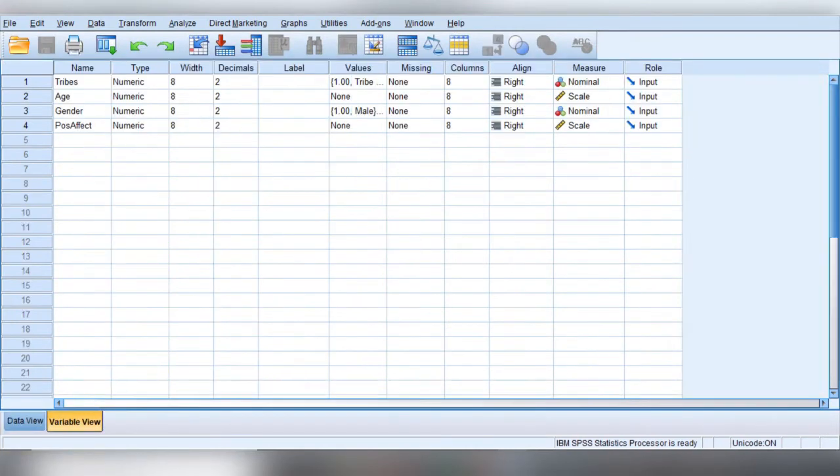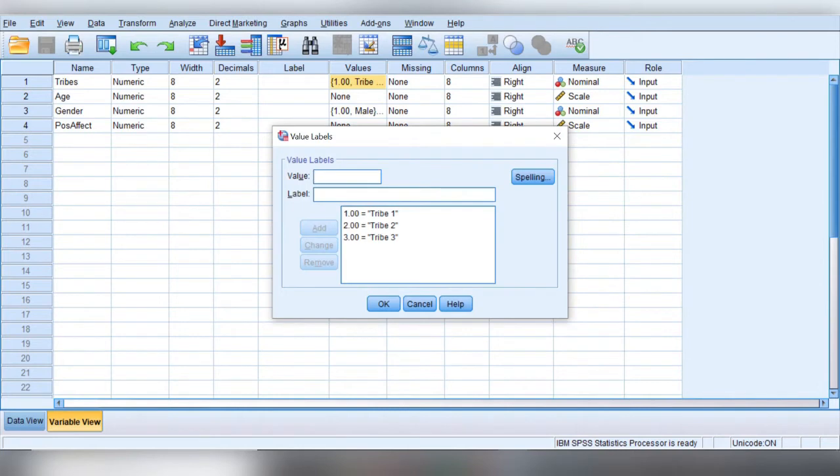This is the data view of SPSS. We have four variables here: tribes, gender, age, and positive affect. Among these, we are concerned with two variables, tribes and positive affect. Here we can see tribes categorized into 1, 2, and 3.